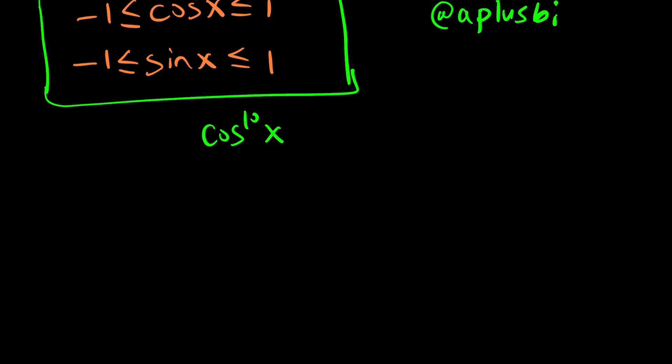10th power cannot be negative, obviously, but it could be 0. So now cosine x to the 10th power needs to be between 0 and 1. It can be 0 because cosine goes through 0 and the same thing goes for sine. So we can say the same thing for sine x to the 10th power. It has to be between 0 and 1.